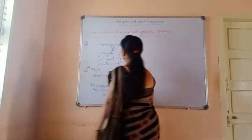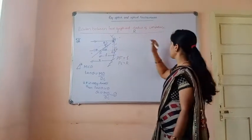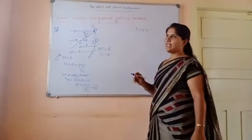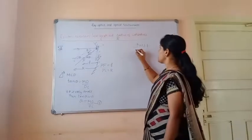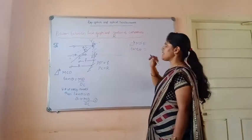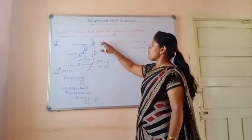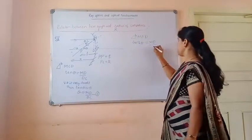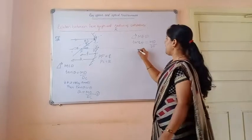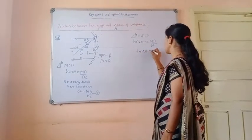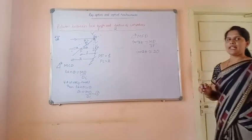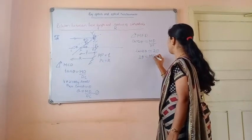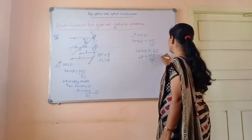Next, from triangle MFD, the angle at F is 2 theta. So tan 2 theta equals MD by DF. Since theta is very small, tan 2 theta is approximately 2 theta. So 2 theta equals MD by DF — call this equation 2. Substituting equation 1 into equation 2: 2 times (MD by DC) equals MD by DF. MD cancels, giving 2 by DC equals 1 by DF, so DF equals DC by 2.